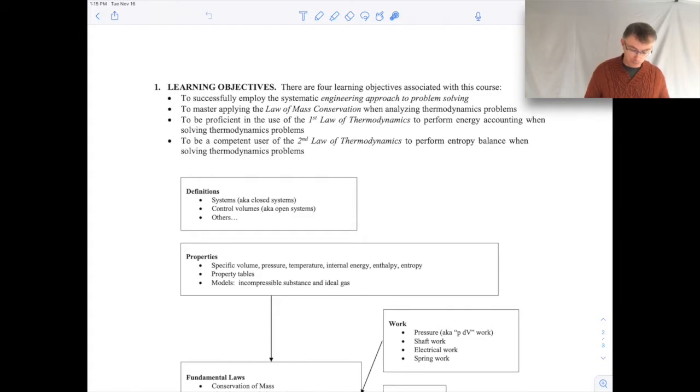And for this particular one, there were four learning objectives. Number one, to successfully employ a systematic engineering approach to problem solving. So we've talked about that, for example, setting up basic equations, drawing control volumes or system boundaries, applying basic equations, doing an energy flow diagram, making appropriate assumptions, and then working through your analyses and communicating it well. Don't want to underestimate the communication part. That's very important. So we've done that, I think. I think we've accomplished that goal.